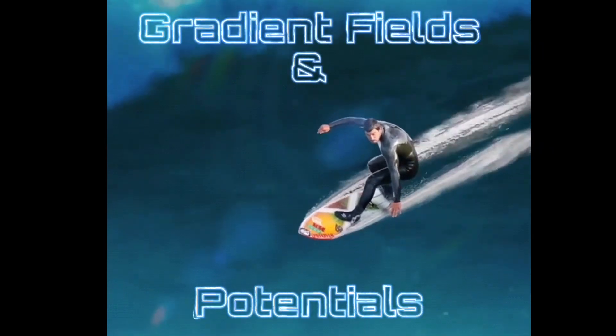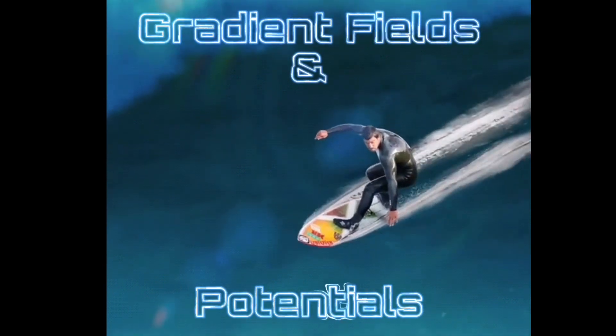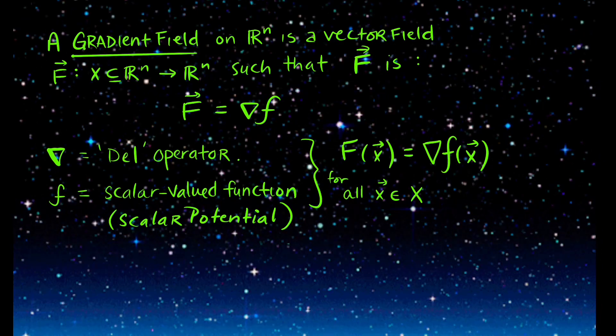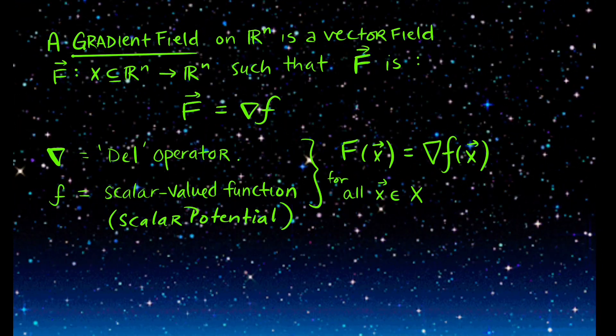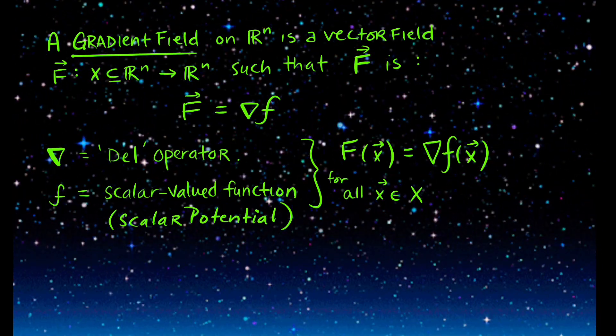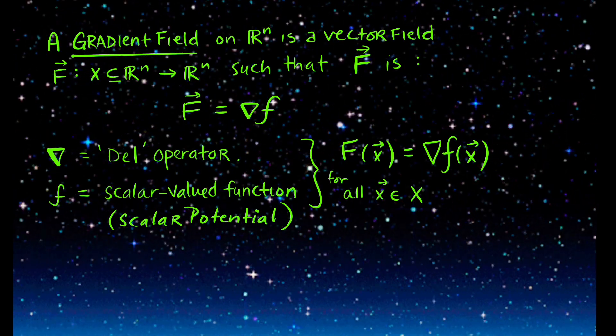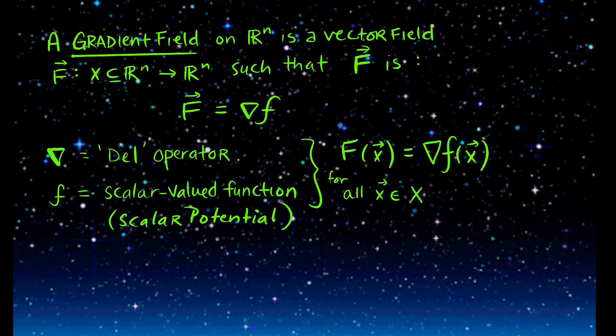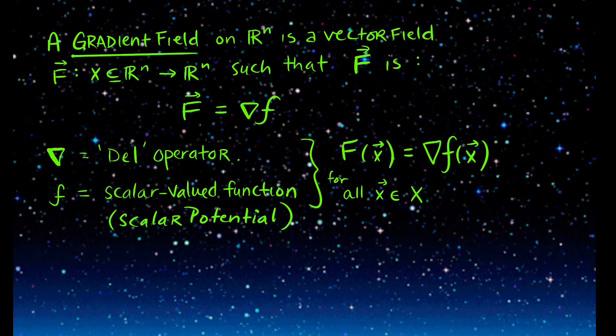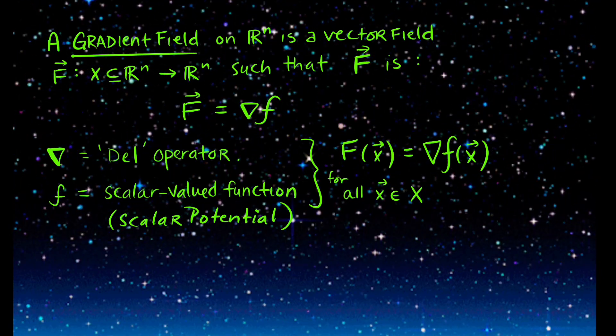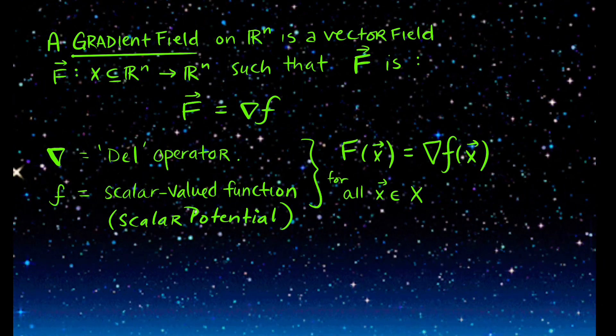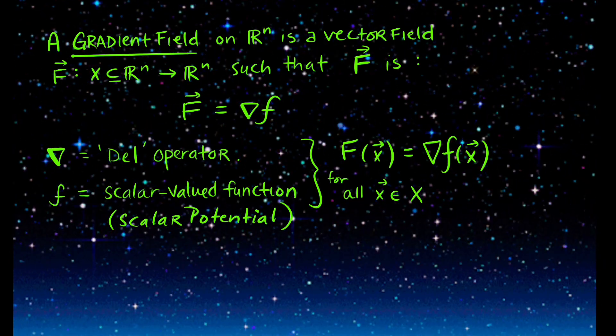Now we're going to consider what a gradient field is and what that has to do with the idea of a potential. We say that a force field is a gradient field if a vector field F can be written as the gradient of a scalar field. The gradient is given by the del operator, that upside down triangle. It's an operator of partial derivatives, and the gradient itself is a vector pointing in the direction of maximum increase of the field.